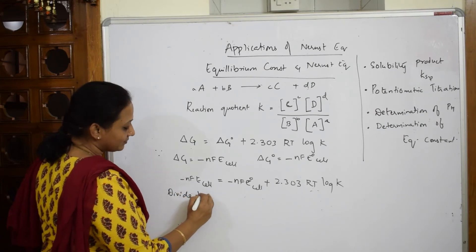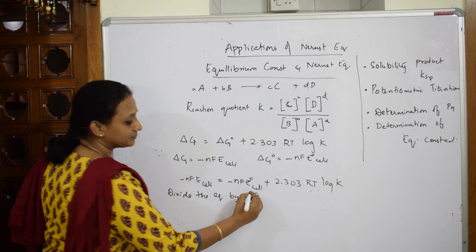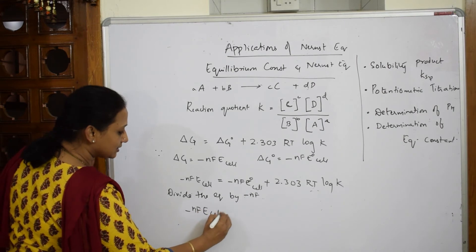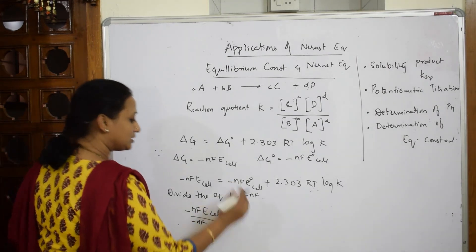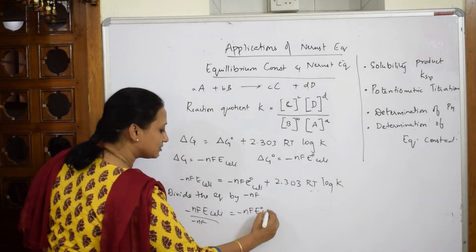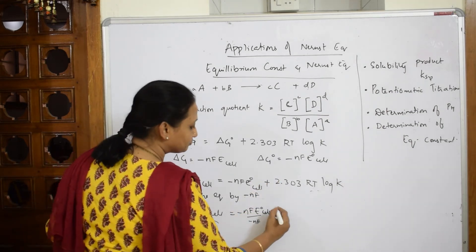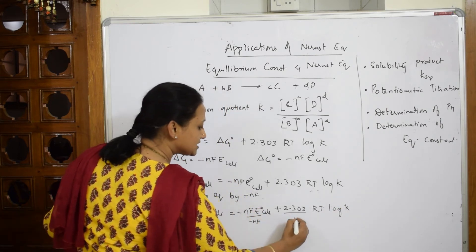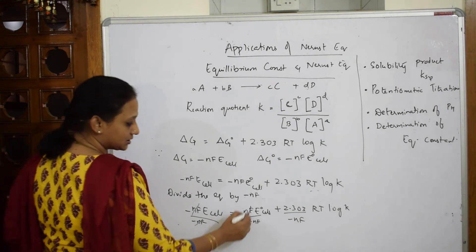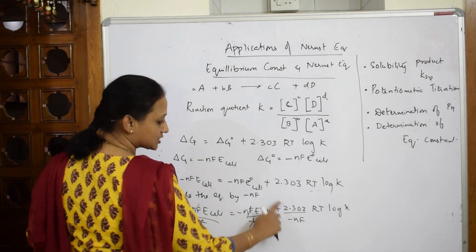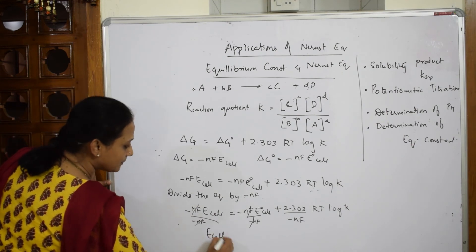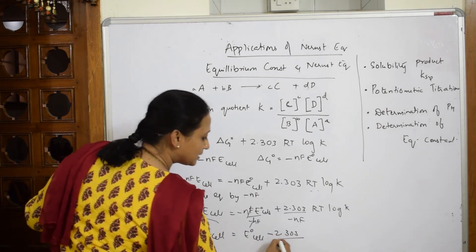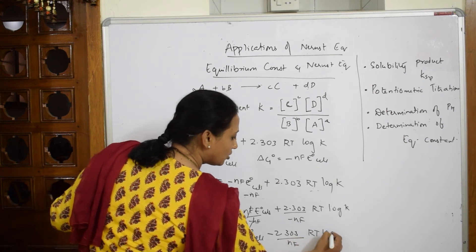You want to divide the equation by minus NF. On the whole you are dividing. So E cell by minus NF is equal to minus NF E naught cell at standard conditions divided by minus NF, plus 2.303 RT log K by minus NF. Now here this and this gets cancelled. Here this and this gets cancelled. Here this whole quantity becomes minus. E cell is equal to E naught cell minus 2.303 by NF RT log K.